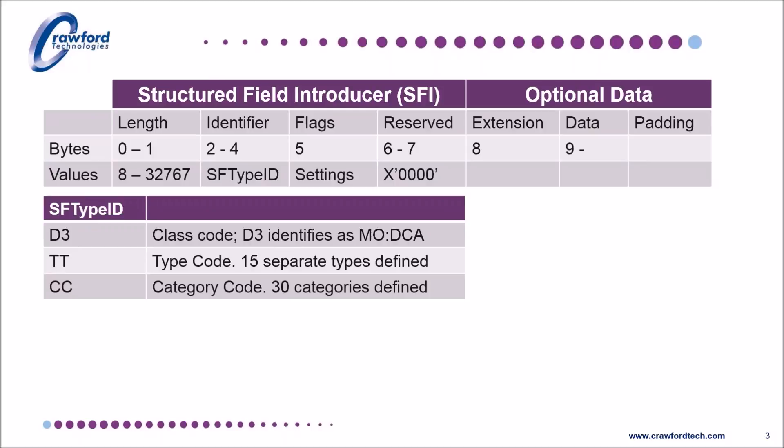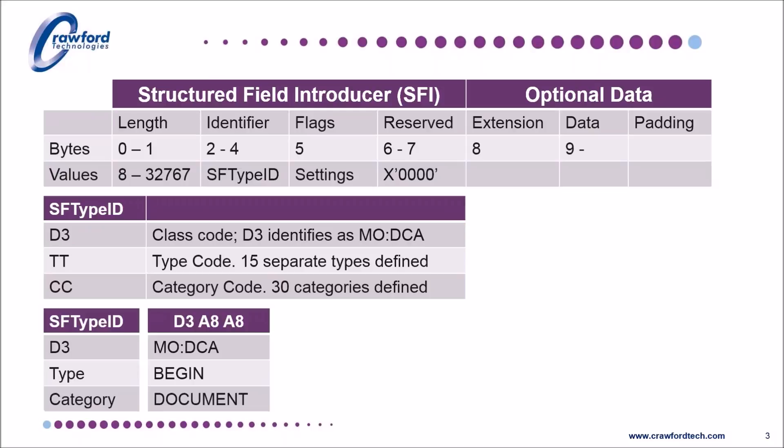The SFTypeID also has a structure. It's broken down into types and categories, which enable rapid understanding and rapid processing of the files. For example, D3, A8, A8 stands for begin document, where type A8 is begin, and document happens to be A8 as well.